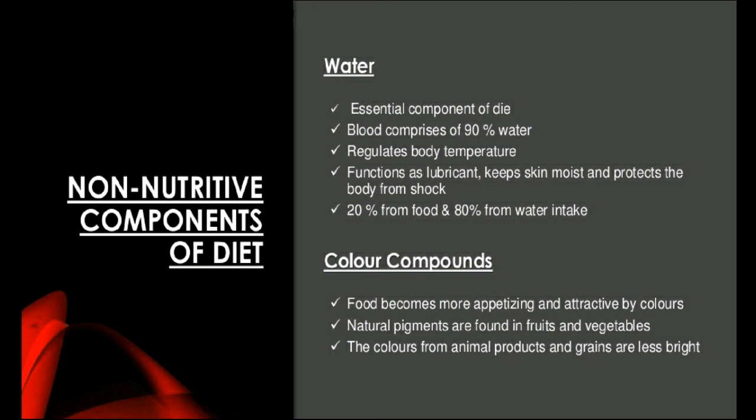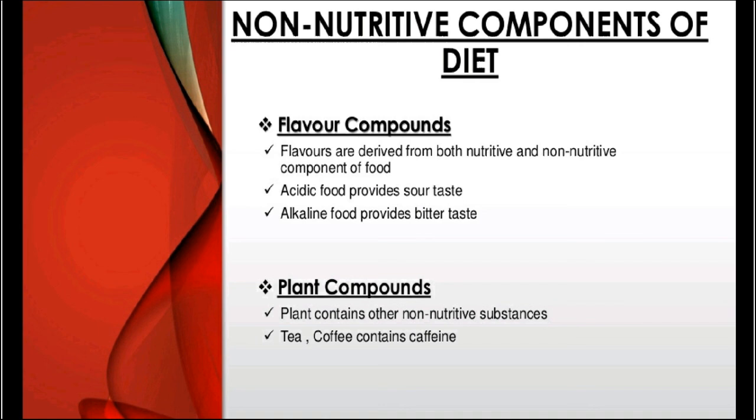The next non-nutritive component of diet comprises color compounds. Food or diet is made more appetizing and attractive by the wide reflection of colors made possible through pigments. Natural pigments are found in fruits and vegetables, while colors derived from animal products and grains are less bright. The various colors derived from fruits and vegetables include red, orange, yellow, green, blue and cream.